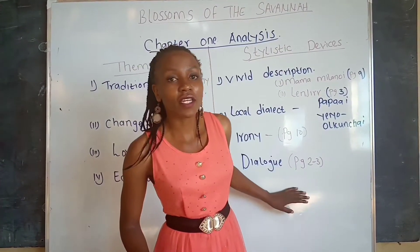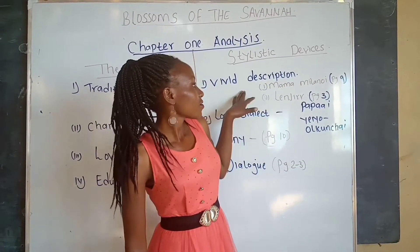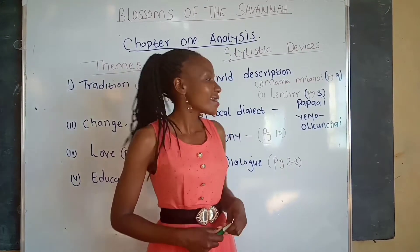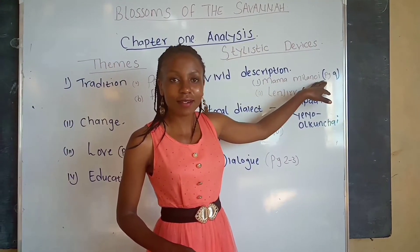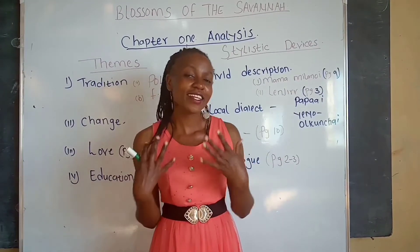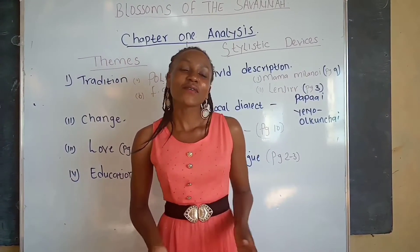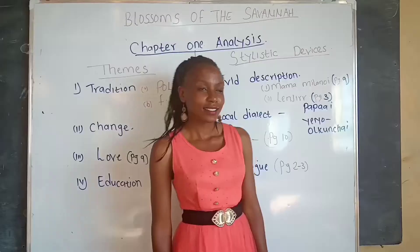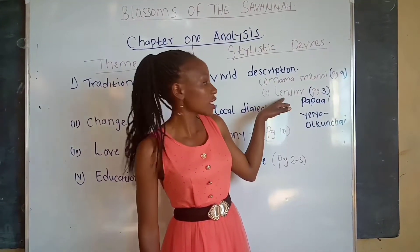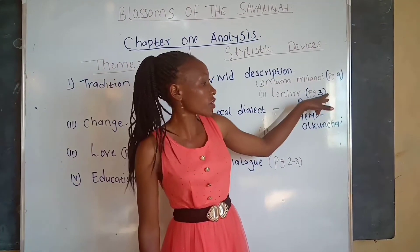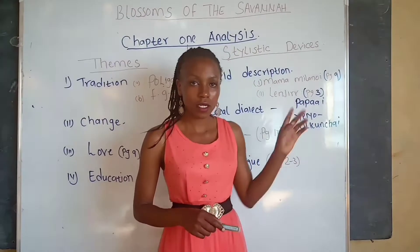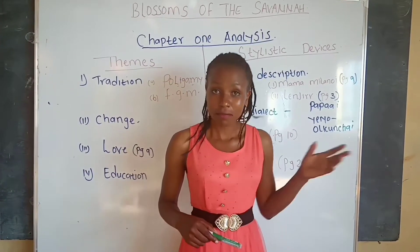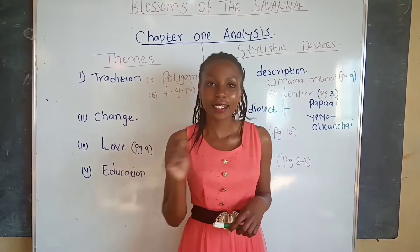Now let us move to the stylistic devices — these are the styles that are evident in Chapter 1. The first is vivid description. Two characters are described in Chapter 1. The first is Mama Milanoi on page 9 — we are told her breasts are full and heavy, her waist slender, and her hips are big and seductively curved. The second character described is Lenjir on page 3, who is Taiyo's boyfriend in Nakuru. Lenjir is described as lanky, dark-haired, black-faced, and with big, lanky eyes.